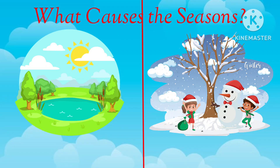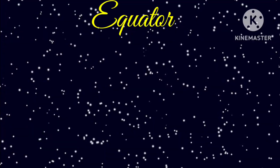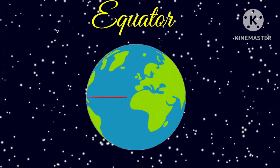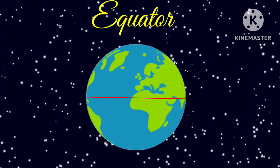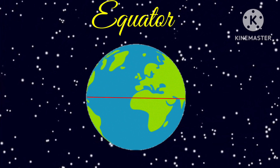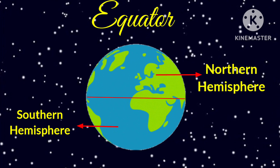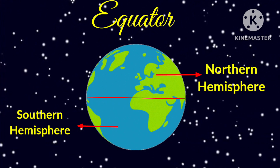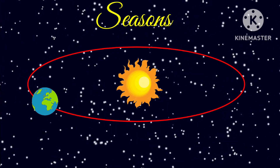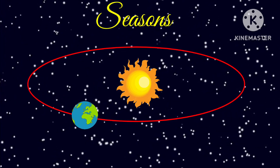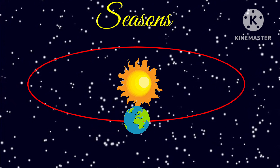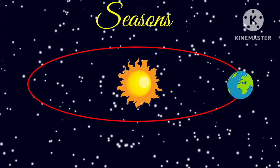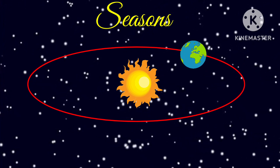Now let's study what causes the seasons. Before that, let's understand what the equator is. The equator is an imaginary line that divides the Earth horizontally. The upper half is called the northern hemisphere and the lower half is called the southern hemisphere. Earth rotates and orbits the sun at the same time. In fact, the Earth orbits the sun at a tilt of 23.5 degrees, and this tilt causes the seasons.